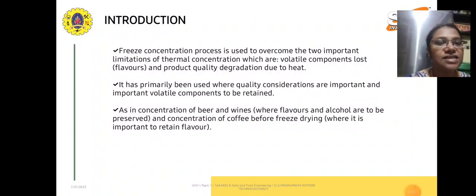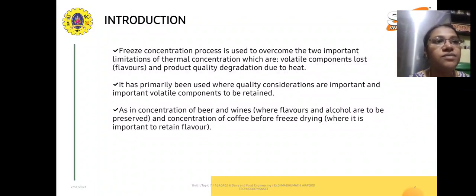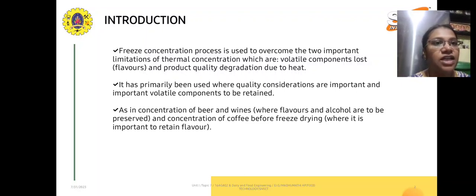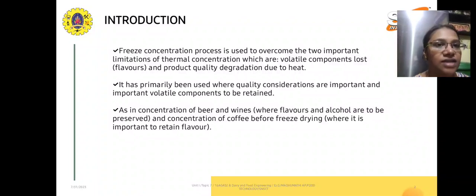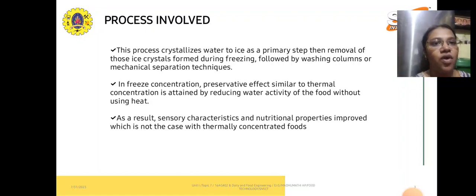Next topic: the continuation of thermal processing. One method is freeze concentration. This method is mainly used to overcome two important limitations of thermal concentration, which are volatile components that are lost and product quality degradation due to heat. It has primarily been used where quality and important volatile components need to be retained, as in concentration of beer, wine, and coffee before freeze drying.